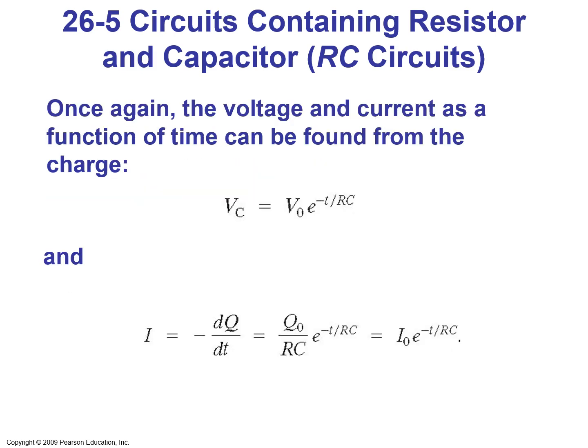The voltage and current as functions of time during discharge: V_C equals V0 times e to the power of minus T over RC, and I equals minus DQ over DT, which equals Q0 over RC times e to the power of minus T over RC, equal to I0 times e to the power of minus T over RC.